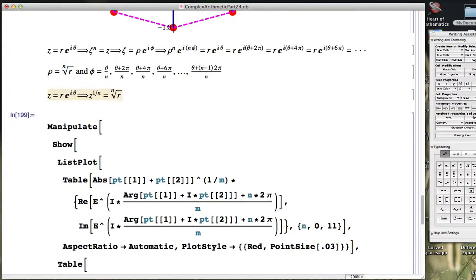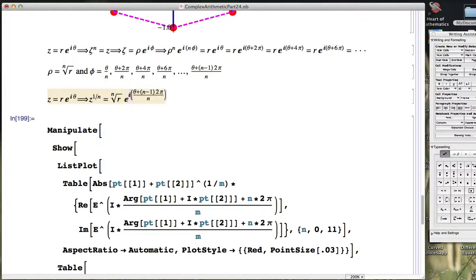In polar form, the modulus is going to be the non-negative nth root of the non-negative number r, which is the modulus of z. So this is a unique number, not a set of numbers. Looking at what the arguments can be here, we can write a general formula for them where the coefficient of 2 pi is what changes. Call it k.